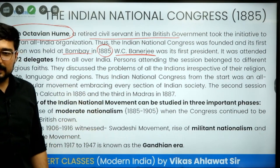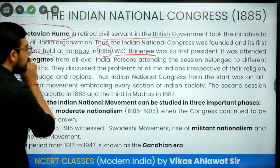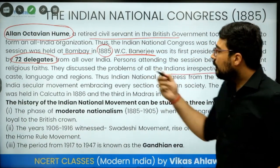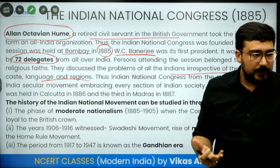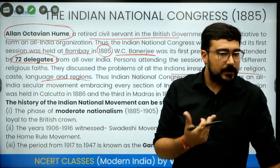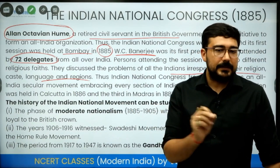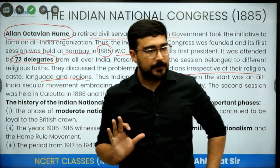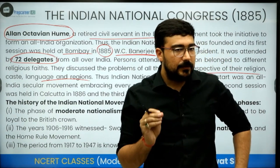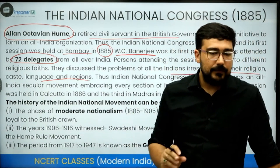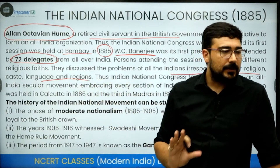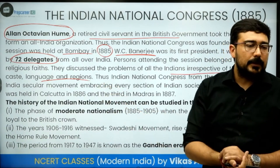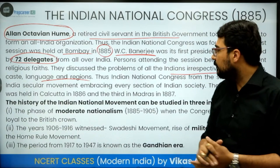How many delegates were there? 72 delegates from different religions, languages, castes, and regions. However, there was a domination of Hindus among them. From 1890 to 1909, hardly 6 percent of the delegates were Muslims, very few were from the lower caste, and very few women were part of the delegation. So it was a very narrow body — not a very broadly representative Congress.